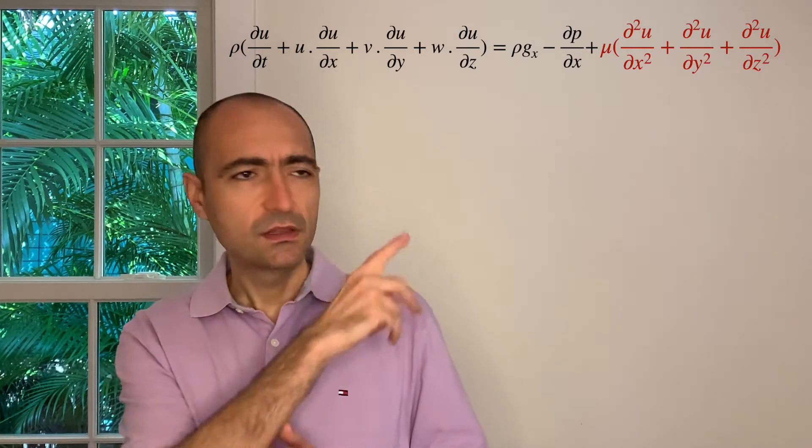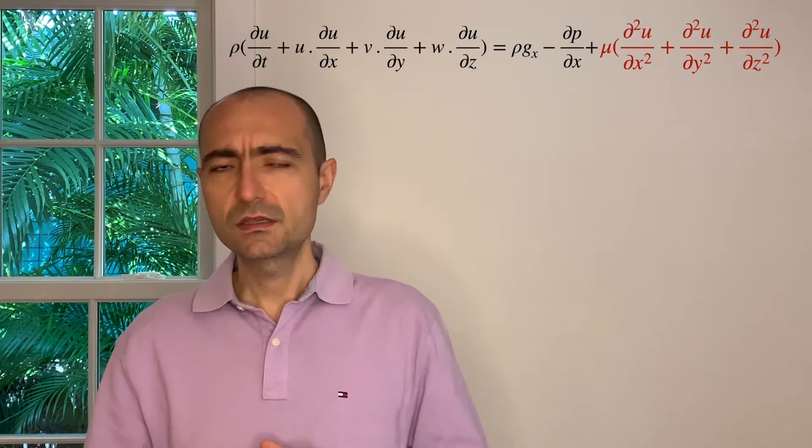And if you look at the rest of the terms, what is that? This is the Euler's equation. Okay? I don't have to cover chapter nine of those Euler's equations. I can cover with this and just put the viscous equal to zero, right?